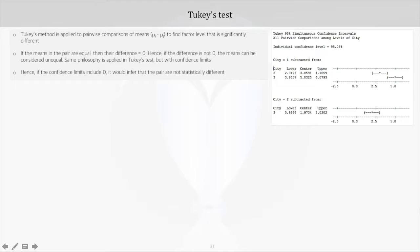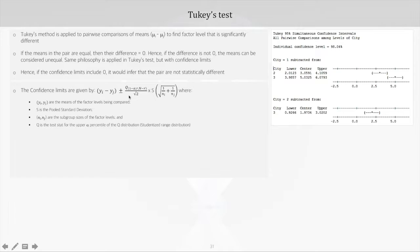The confidence limits in this test are defined by this formula. Let's look at the individual terms: y_i minus y_j, where y_i and y_j are the means of the factor levels being compared, s is the pooled standard deviation, n_i and n_j are the subgroup sizes for the factor levels under consideration.